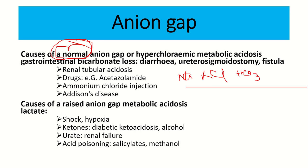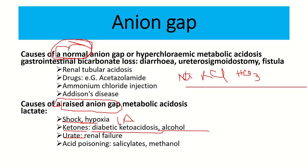Raised anion gap occurs when non-electrolyte acids accumulate. In shock and hypoxia, lactic acid develops — lactic acid is not an electrolyte, so the anion gap rises. Ketones are not electrolytes, so diabetic ketoacidosis and alcoholic ketoacidosis cause a raised anion gap. In renal failure, urea increases but is not an electrolyte. Salicylate and methanol poisoning also cause a raised anion gap.